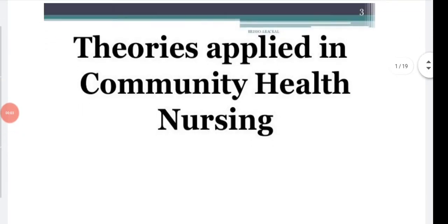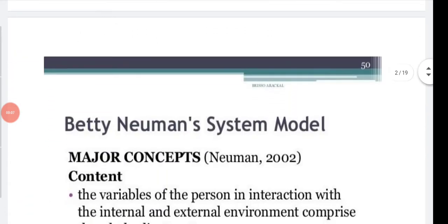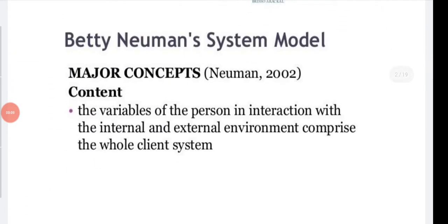Welcome back. We'll continue the theories applied in community health nursing. The next theory is Betty Newman's System Model. The major concept, given by Newman in 2002, involves the variables of the person in interaction with the internal and external environment, comprising the whole client system — a person living in a particular area whose internal and external environment affect their body and health.